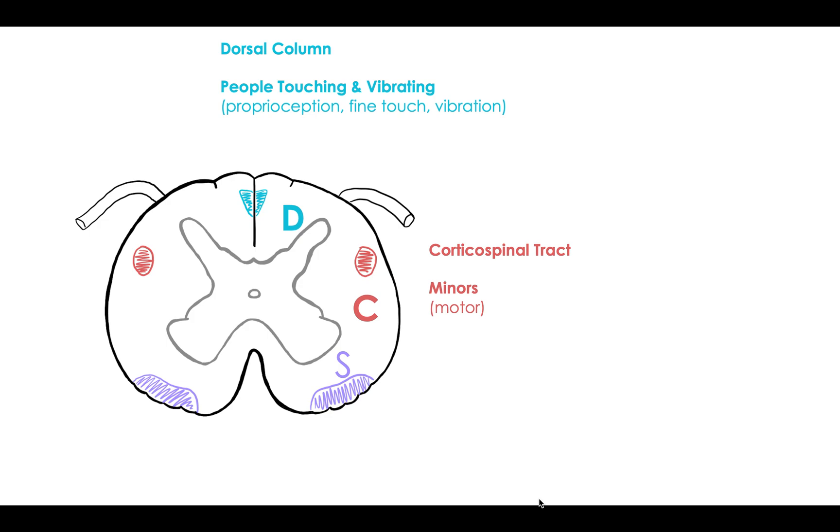C is going to be the corticospinal tract, and this is going to be minors. So the problem here would be your motor, and then S is for the spinothalamic tract. And so this is going to be hot pants for pain and temperature.